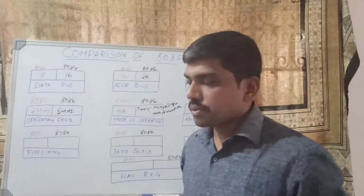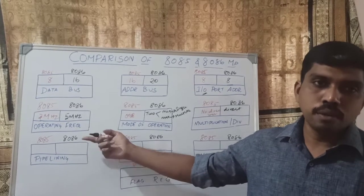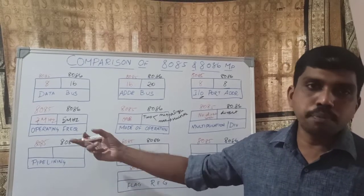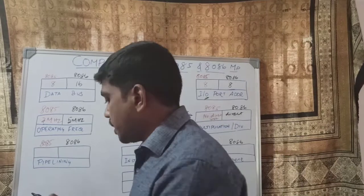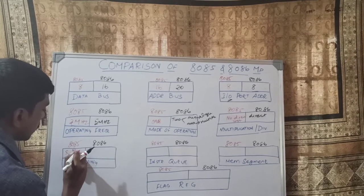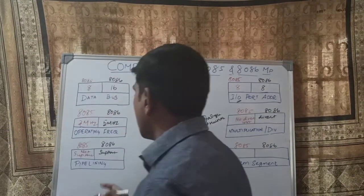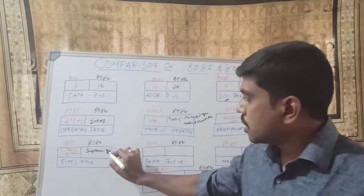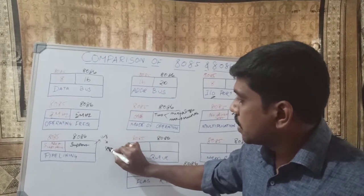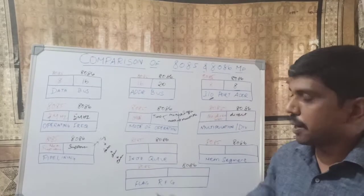The next property is the pipelining concept. Without pipelining, in a single clock pulse it performs one task at a time. With pipelining, in a single clock frequency it performs multiple tasks simultaneously. The 8085 microprocessor does not support pipelining, but the 8086 microprocessor does support it. For example, in one clock cycle it performs fetching the instruction, decoding the instruction, and executing the instruction — that is the pipelining concept.